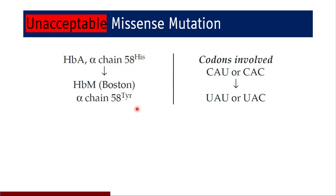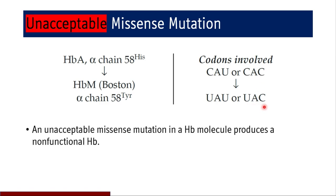An example of an unacceptable missense mutation is HbM. In adult hemoglobin, at the 58th position of the alpha chain, histidine is replaced by tyrosine. The corresponding change at the mRNA level is CAU to UAU or CAC to UAC. Histidine is a positively charged polar amino acid, and tyrosine is a neutral polar amino acid. However, because of the position in the primary and quaternary structure — and this is the alpha chain, not the beta chain — the missense mutation is unacceptable, producing non-functional hemoglobin. This is a non-conservative substitution.